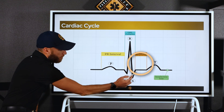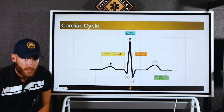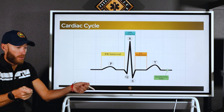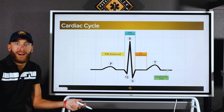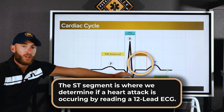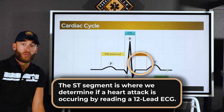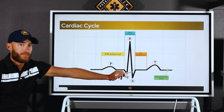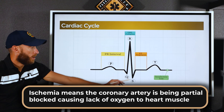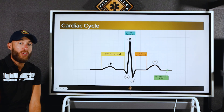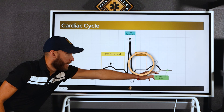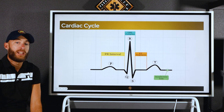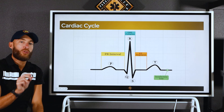The ST segment is particularly critical when reading a 12-lead EKG. ST elevation — where the ST segment is above the baseline — indicates a heart attack. ST depression — where the segment is below the baseline — indicates ischemia, meaning the heart's coronary arteries are being choked. We compare the ST segment to the isoelectric baseline to determine elevation or depression.